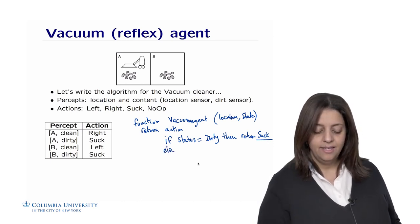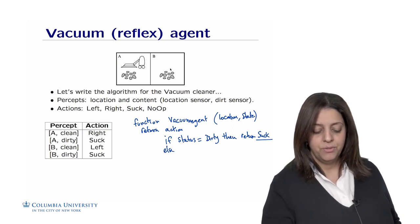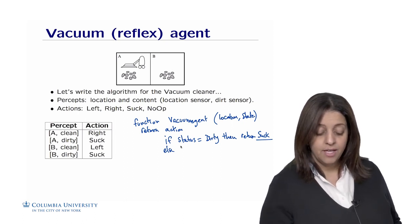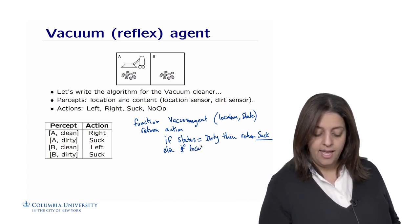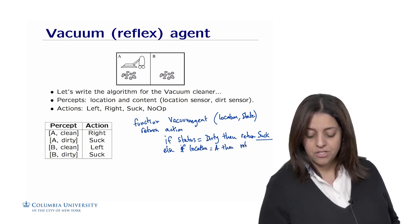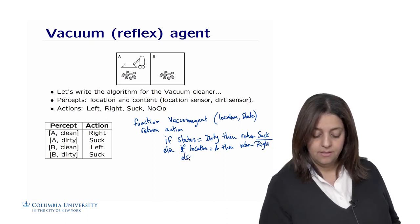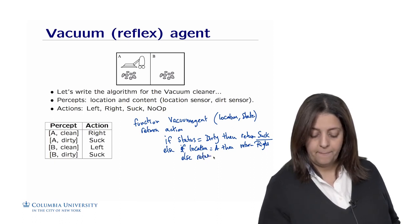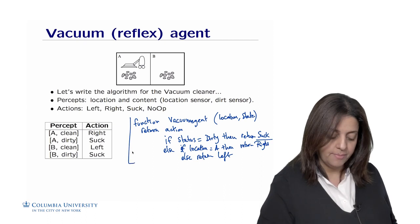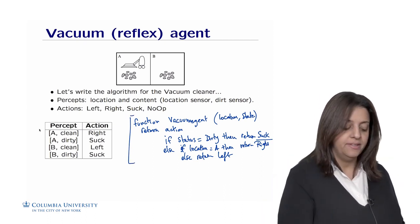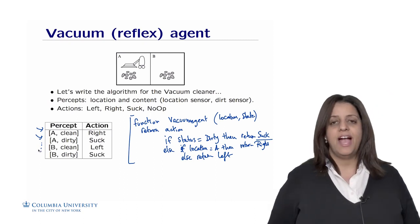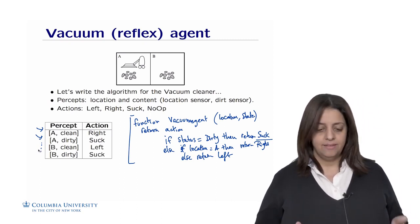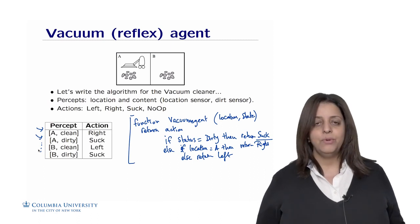Else, the status is clean. If you are in a room and it's clean, you need to move to the next room. If the location is A, return the action of going right; otherwise, return the action of going left. This is a very simple reflex agent that looks up the table and checks which action is most appropriate based on only the current percept.